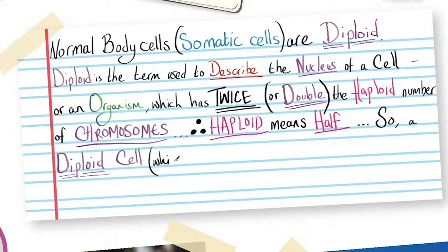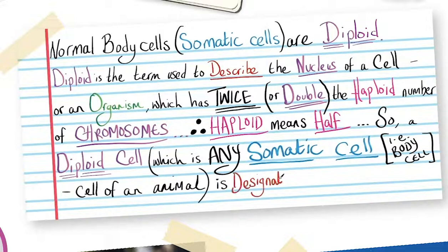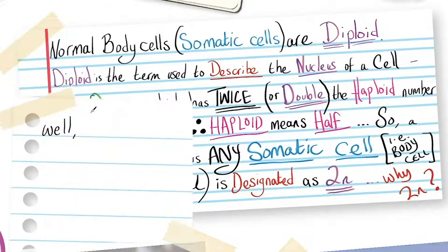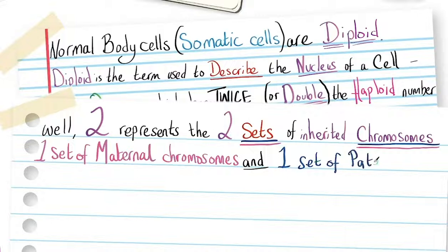So a diploid cell, which is any somatic or body cell of an animal, is designated as 2n. Why 2n? Well, 2 represents the two sets of inherited chromosomes: one set of maternal chromosomes and one set of paternal chromosomes.